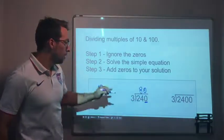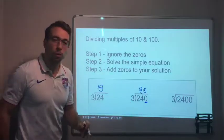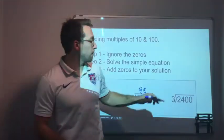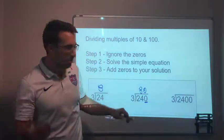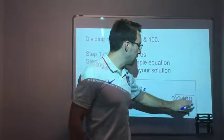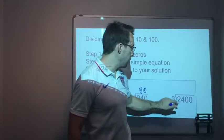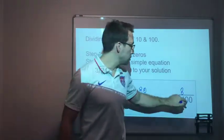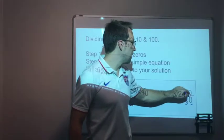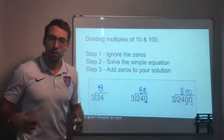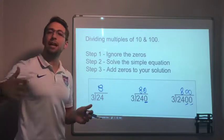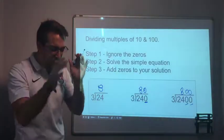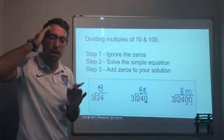And then lastly, how many zeros did we ignore? Here we ignored one zero, so 240 divided by 3 is 80. Then 2400 — now we have two zeros. Ignore the zeros, 24 divided by 3 is 8, and there are two zeros, so 2400 divided by 3 is 800.